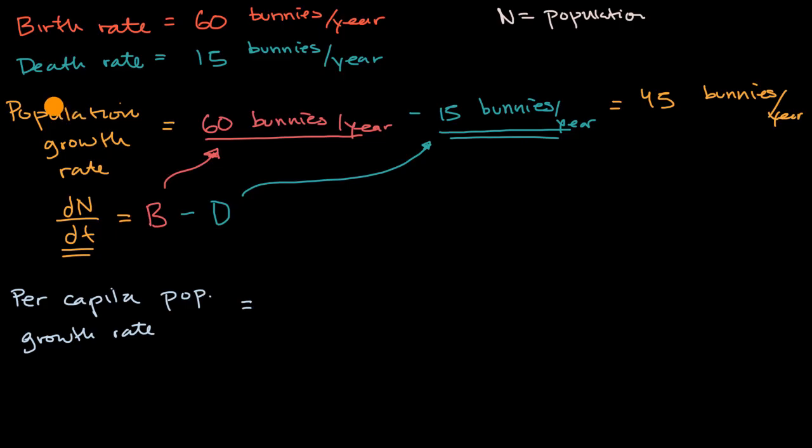Well, one way you could think about it is the total population growth rate divided by the population, divided by the number of people there are. So it's going to be our population growth rate.